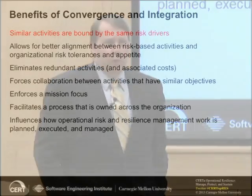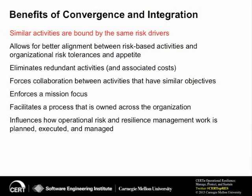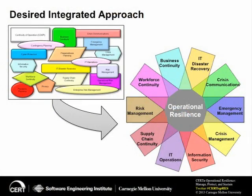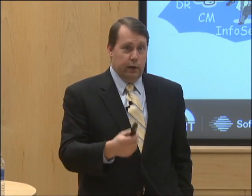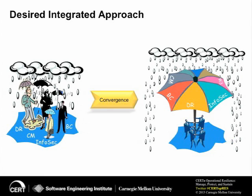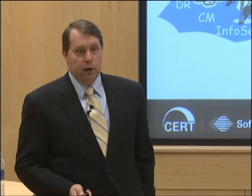The primary benefit here is ensuring that similar activities are bound by the same risk drivers so that we have a common language and taxonomy. When we're talking about risk, is everybody talking about it and measuring it in the same way? Other points include addressing redundant activities and encouraging collaboration between activities that have similar objectives. What we're really after is this integrated approach — taking all the disjointed activities and bringing them together such that they all coalesce around that core of operational resilience. Rather than each area trying to fend for themselves in the rainstorm, we've got everybody under the common umbrella in the converged environment.